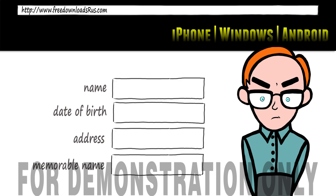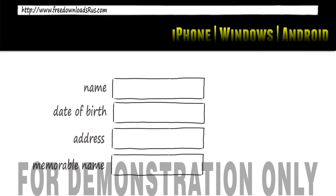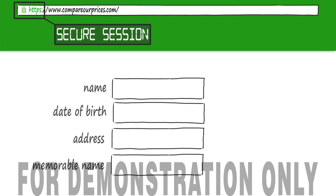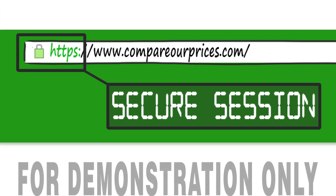Is the web address different from the real one? Sometimes this is obvious, but criminals can create ones which are very close to the real thing. Is it an HTTPS address? The S means it's a secure session, and there will be a padlock symbol in the address bar. Getting into the habit of checking the web address can prevent you from being caught.